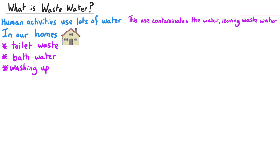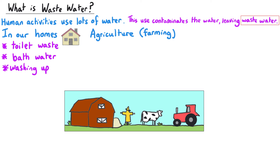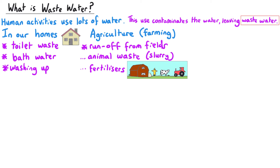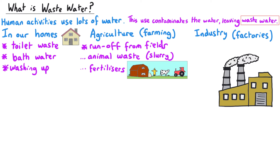Anything that we put down our drains is wastewater. We've also got agricultural sources of wastewater, mainly from farming. For instance, runoff from fields, which might include animal waste — sometimes referred to as slurry — or fertilisers and pesticides. We've also got industrial sources of wastewater, and typically we're referring to factories here, which might have all manner of different harmful chemicals that they end up releasing down their drain system.